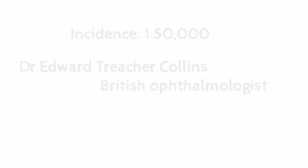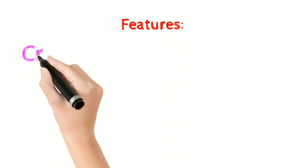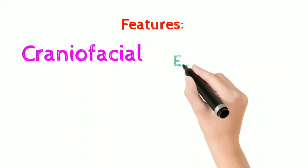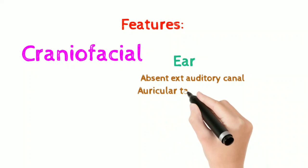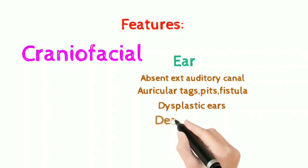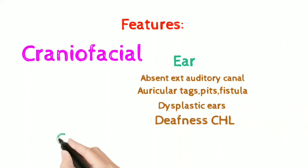Now let's look at the pathological and clinical features. Some patients are mildly affected while some are severely affected, and the anomalies are often bilaterally symmetrical. The most important feature is craniofacial abnormality. In the ear, there could be absent external auditory canal, pre-auricular tags, pits, fistula, and dysplastic ears. There could be deafness, which is usually conductive hearing loss, as well as choanal atresia or stenosis.